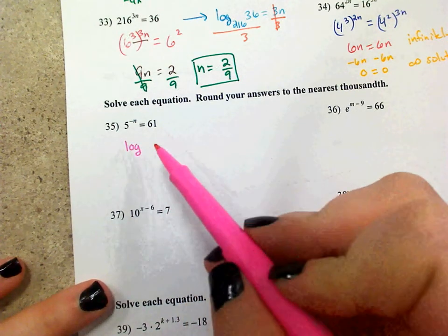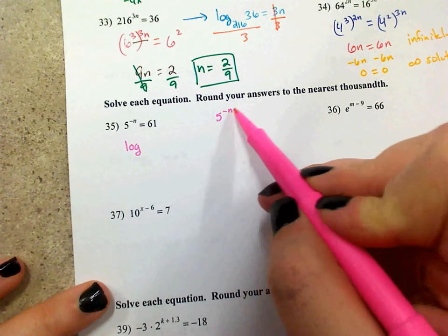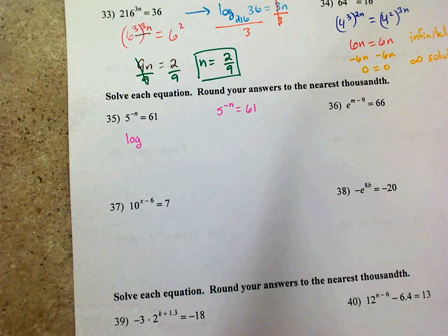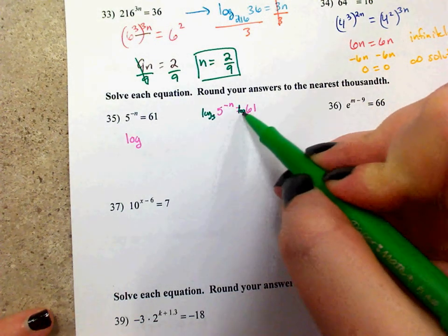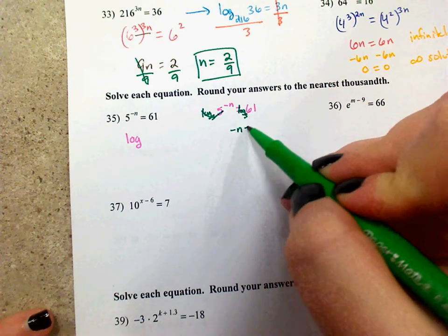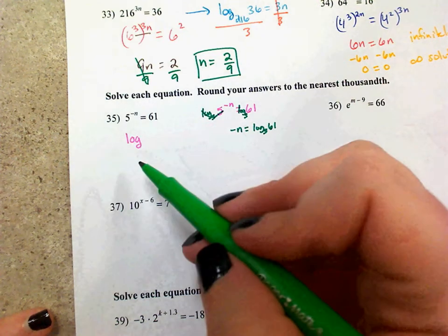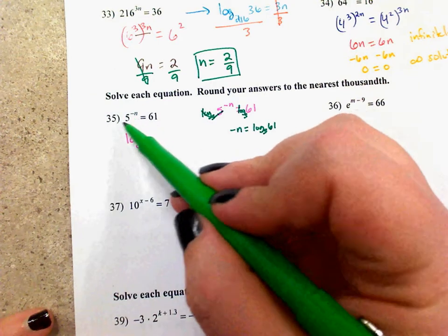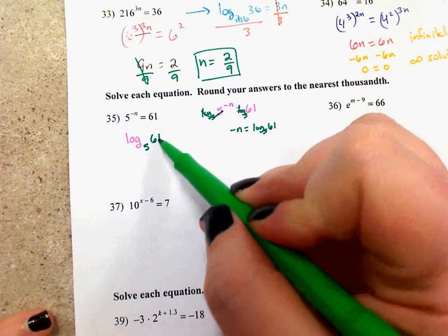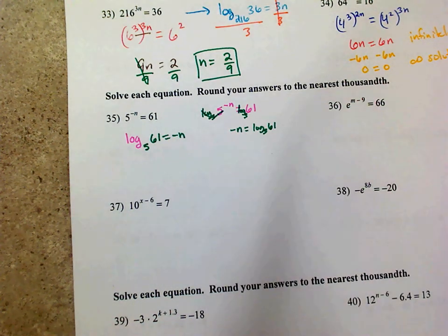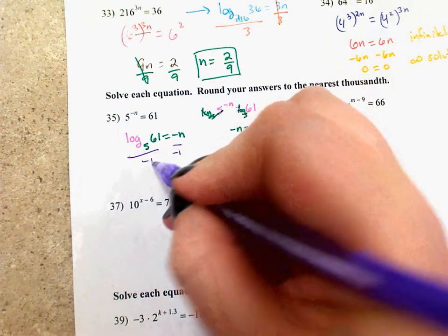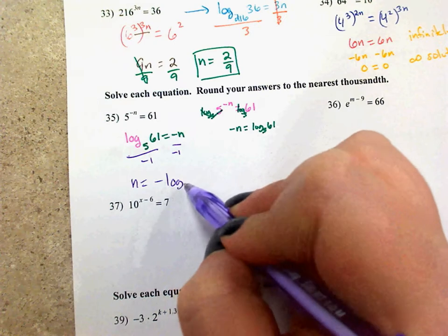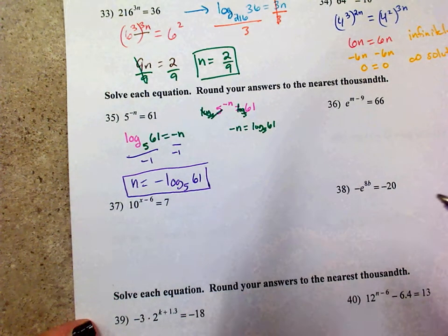If we rewrite 5 to the negative n equals 61 as a log, it's just like when you have e and throw a natural log in front of both sides — you could throw a log base 5 in front of both sides. They cancel each other out, and you're left with negative n equals log base 5 of 61, which is what we get when we convert to a log. To solve for n, divide by negative 1 to change the sign: n equals negative log base 5 of 61. No further simplification is necessary or possible.